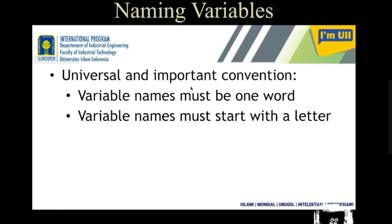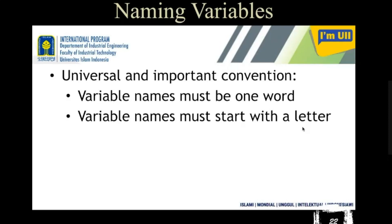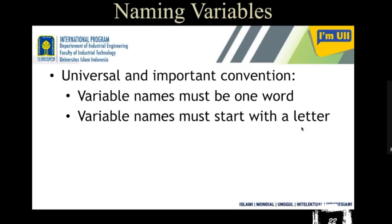The second rule is that a variable name must start with a letter. You cannot start a variable name with a number — for example, '1lastName' or '2lastName' is not allowed, but 'lastName1' or 'lastName2' is fine. A variable name cannot start with a special character like dollar, hash, at-the-rate, or any other special character at the beginning.